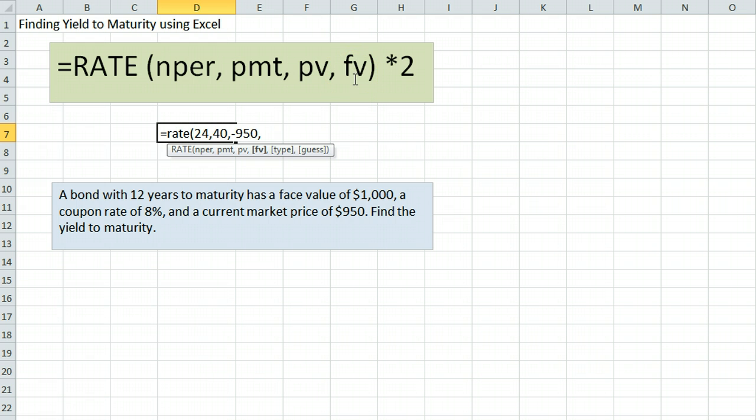The last piece of information we need here is the future value. The future value is the amount we are going to receive at maturity. We receive the face value at maturity, $1,000.